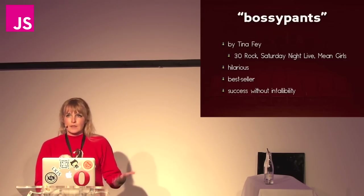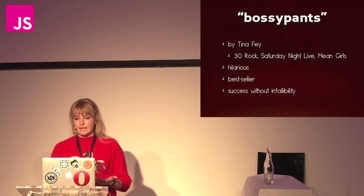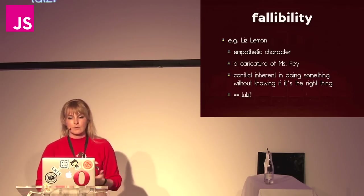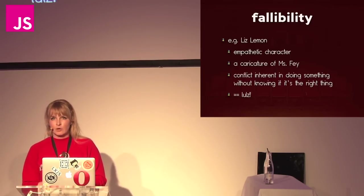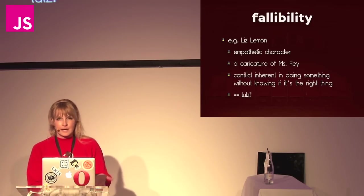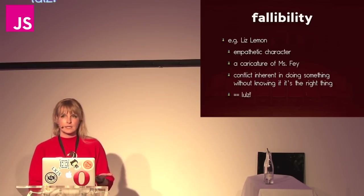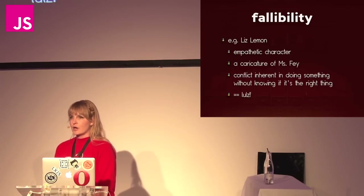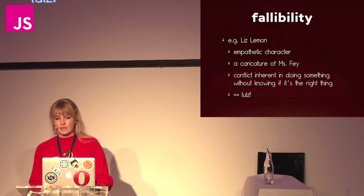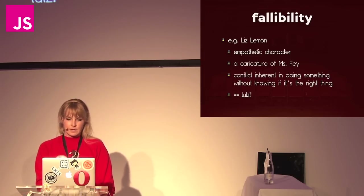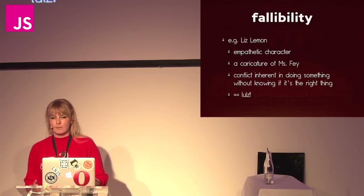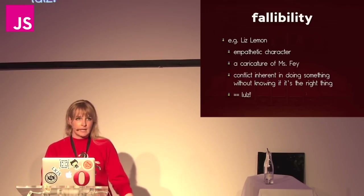The thread that continues throughout the book, the theme, is this idea of success without infallibility. If you're aware of the character Liz Lemon from the show 30 Rock, she's a really good example of fallibility. She's a very empathetic character, somebody you can relate to immediately because she's not perfect. She's a caricature of Tina Fey but not exactly like her. Tina Fey is obviously very successful; Liz Lemon just writes a TV show and kind of suffers, and her whole character is about the conflict of wanting to do things and having no idea if they're the right things.